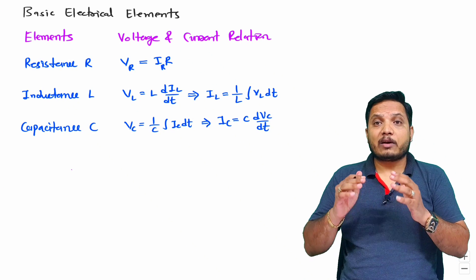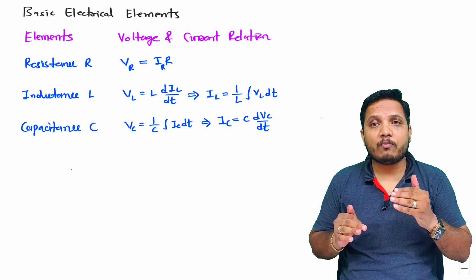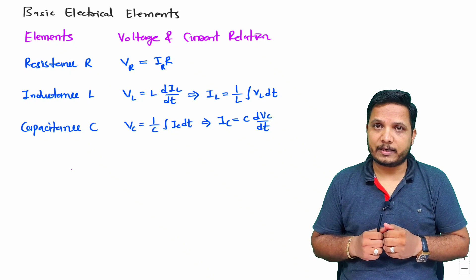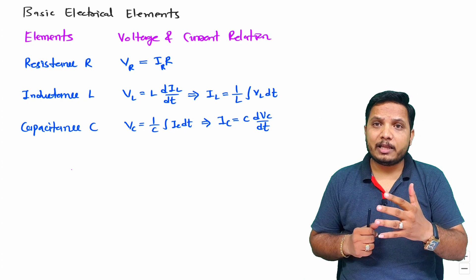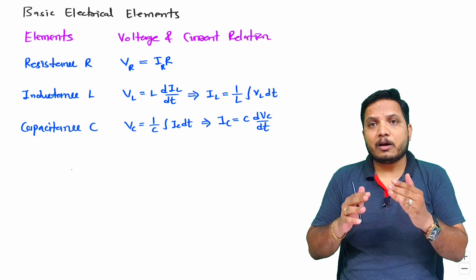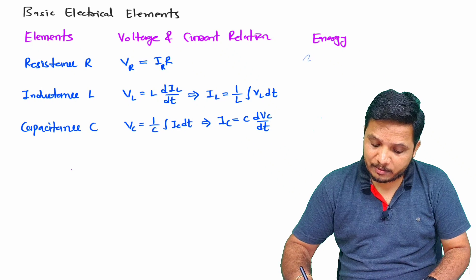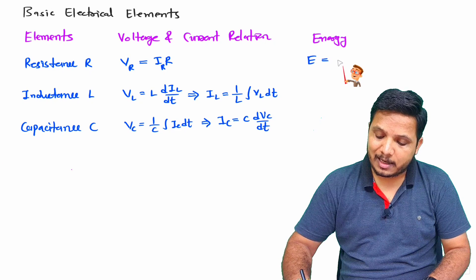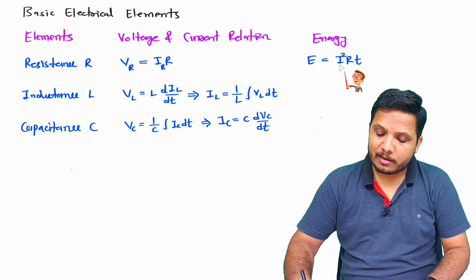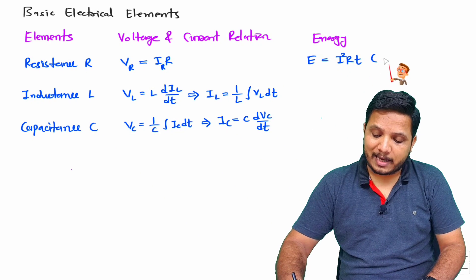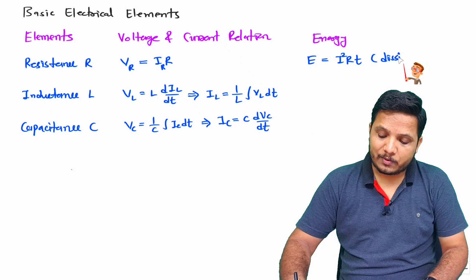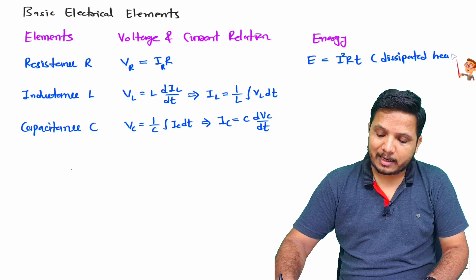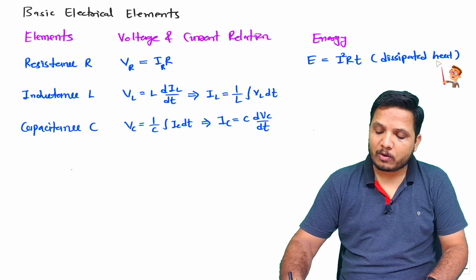These equations are very essential to understand how voltage and current behave across resistance, inductance, and capacitance. Now regarding energy: for resistance, energy is dissipated as heat, equal to I²R times t, which is power times time. We generally want to avoid resistance in a circuit because more resistance means more heat dissipated.